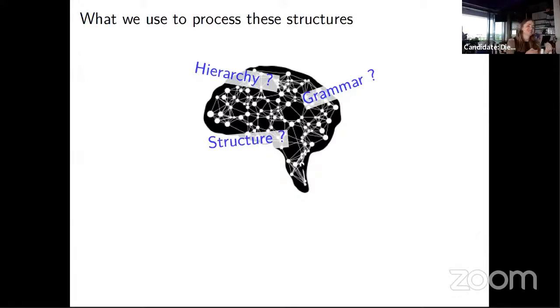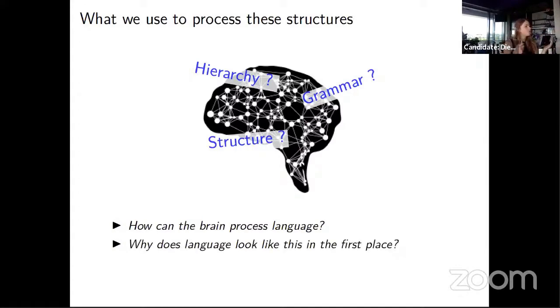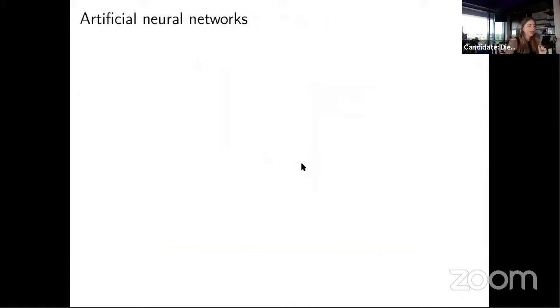These are the questions that I have been thinking about for a long time and that I'm also trying to answer in my research. How is it possible that the brain that seems to be relatively unstructured in a way can process language so well? And if language is a product of our brain, why does it look like this in the first place? Now if you've ever talked with me about my research, you may at this point start wondering—why? Halfway in my presentation, I still haven't said a single word about computers. Because typically when people ask me what I do, I say that I make computer models of language.